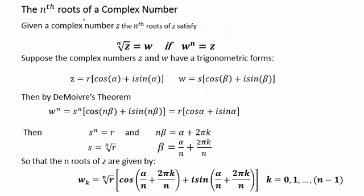Now let's look at the nth roots of a complex number. Suppose you have a complex number z, then the nth root of z would be another complex number w, if w to the n were z. To find our nth root of z, w, we suppose z and w have trigonometric forms that look like this. They would each have their own modulus and their own argument.